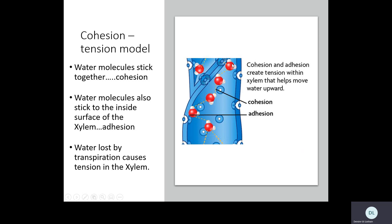If one water molecule goes out through a stomata hole in the leaf, it pulls the one behind it, which pulls the one behind that, continuing all the way down — creating a strong pulling force to draw water up through the xylem to a great height. There's also another helpful force called adhesion: water also tends to stick to the surface of other thin tubes. The xylem is a thin tube, and water sticks to the sides of the xylem — that is called adhesion — which also helps pull water up through the xylem.